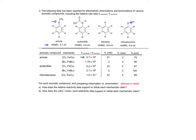For example, anazole undergoes chlorination at a rate that is nearly 10 million times faster than the chlorination of benzene. With the substituent, we have a possibility of ortho, meta, or para isomers, but we see that the major pathway gives the para isomer.